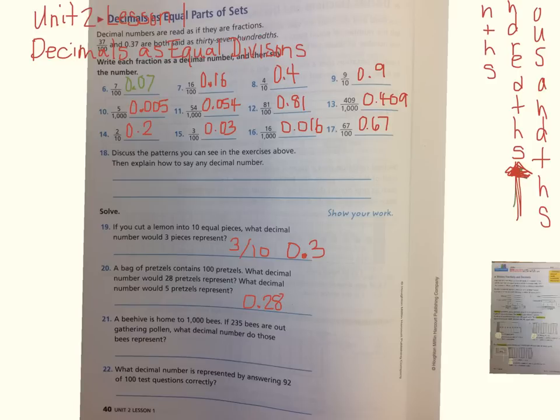What decimal number would five pretzels represent? Well, that's only five pennies, so it would be zero decimal zero five. Five cents of one hundred.